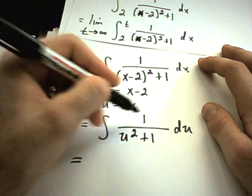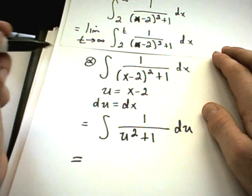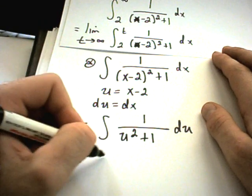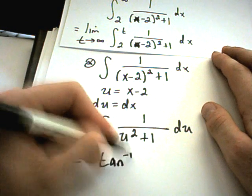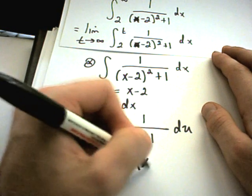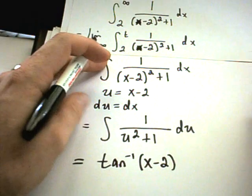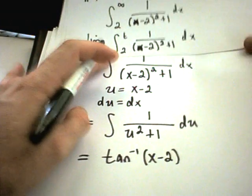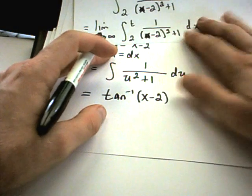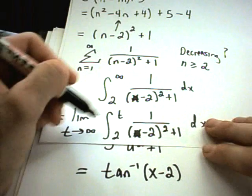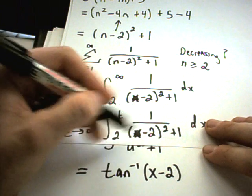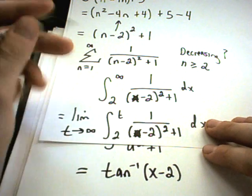And recall that 1 over u squared plus 1, this is the arctangent formula. So it says I'm going to get arctangent of u, which is x minus 2. And again, normally you would have a plus c, but I'm going to turn this back into my improper integral anyway. So it says this original thing, if you integrate it, you'll get arctangent of x minus 2.